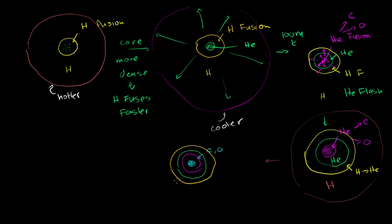Eventually all of this fuel will run out — all of the fusing hydrogen will run out, all of the fusing helium will run out, the inert helium will be used up as it fuses into the carbon-oxygen core — until you get to a point where you literally just have a really hot core of carbon and oxygen. It's super dense the whole time, with heavier and heavier elements appearing in the core, getting denser and denser. But in the case of the sun, it will not get hot enough for the carbon and oxygen to fuse further. So it really will just be this super dense ball of carbon and oxygen.